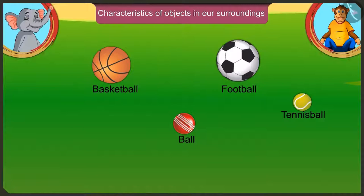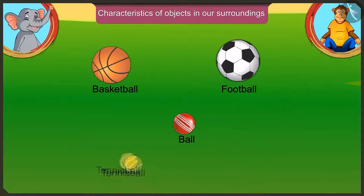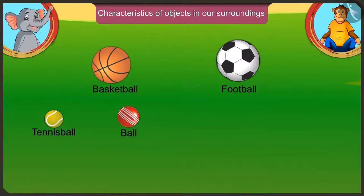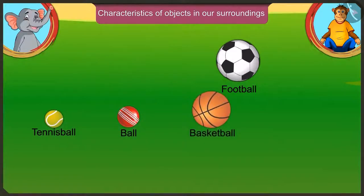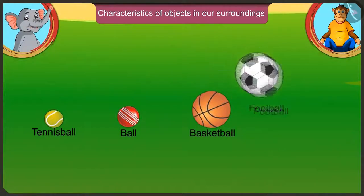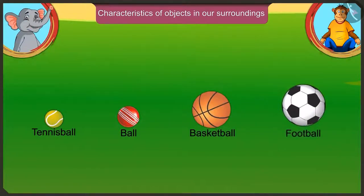Now arrange these balls in ascending order of their size. According to their size, we first place the smallest tennis ball, then the ball bigger than that, then basketball, and finally the largest football. Well done Appu!